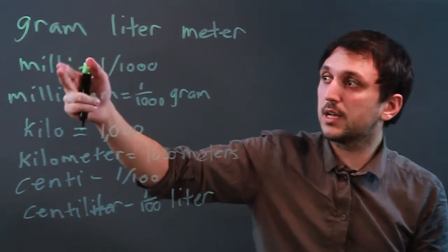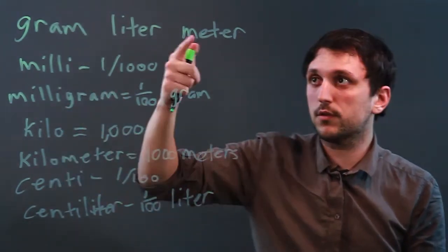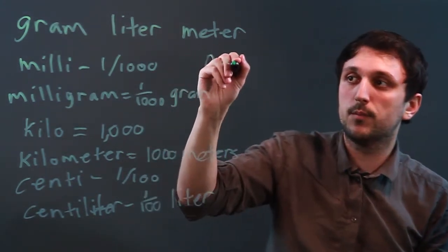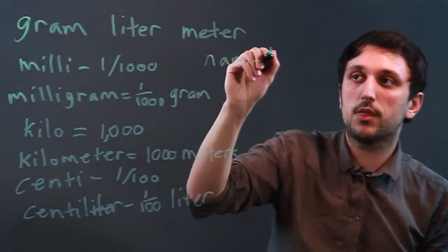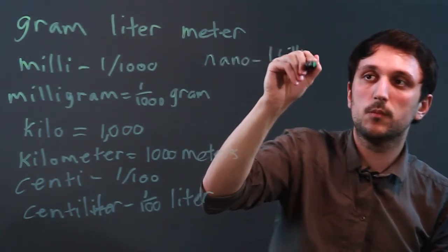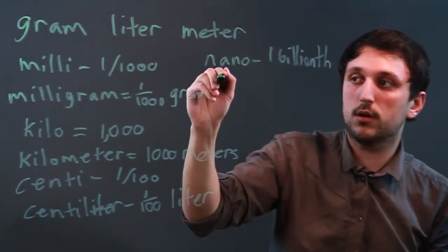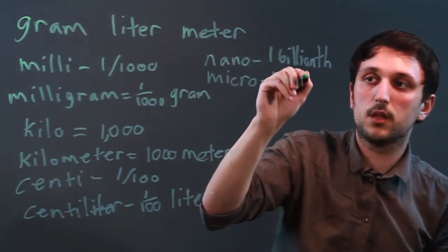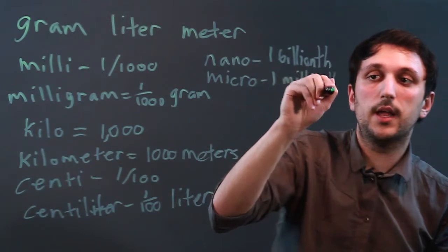So these are your most common prefixes for the metric system. And you will see other ones such as nano, which is one billionth, or micro, which is one millionth, and several others.